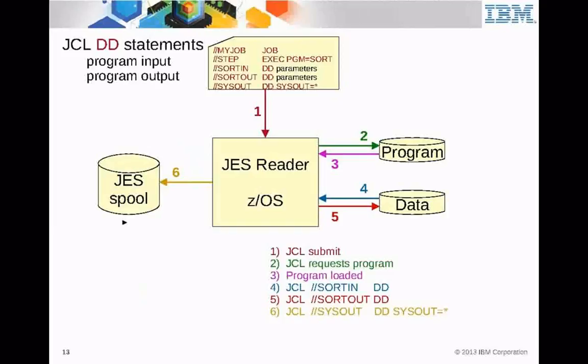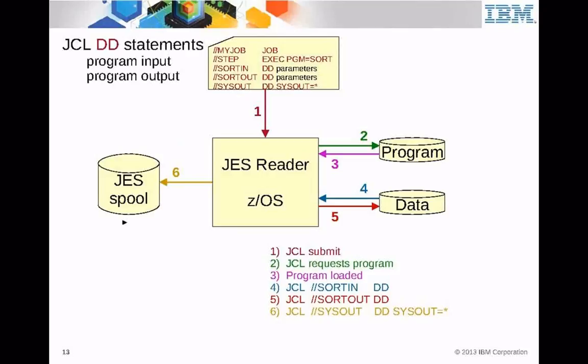Here's an example of this JCL going in — the program loaded is SORT. For the data, SORTIN has no source specified in this example. Notice we have SYSOUT — DD SYSOUT=asterisk — which is a special reserved word in the DD parameter meaning write it to the JES spool. So SYSOUT is going to go to the JES spool.